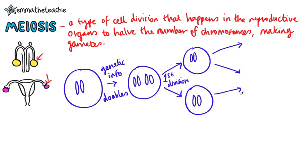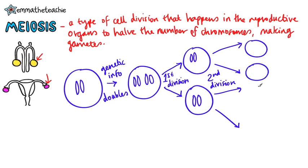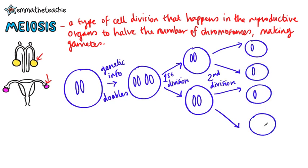Here's where meiosis differs from mitosis — it has a second division. So we're going to end up with four cells. Each one is a gamete, and each one has got half as many chromosomes as the parent cell, or the body cell.